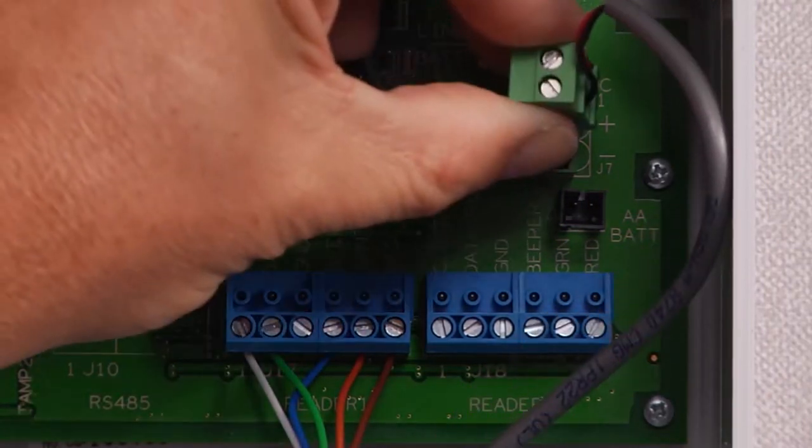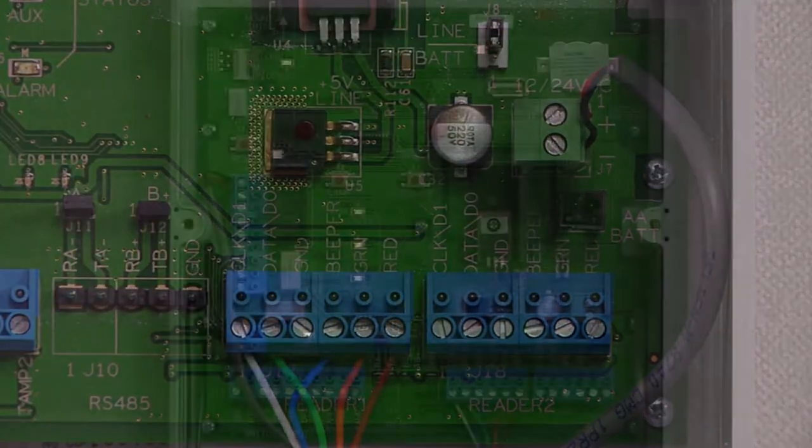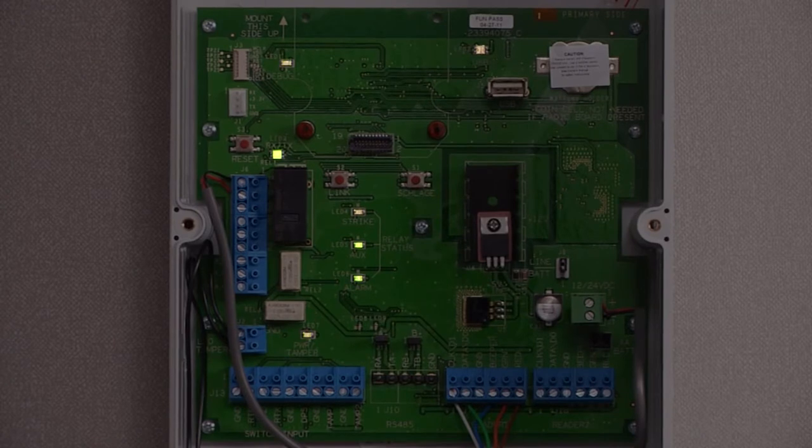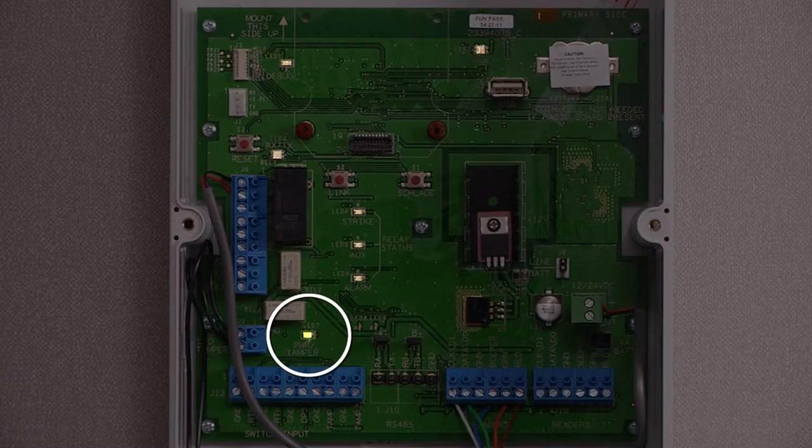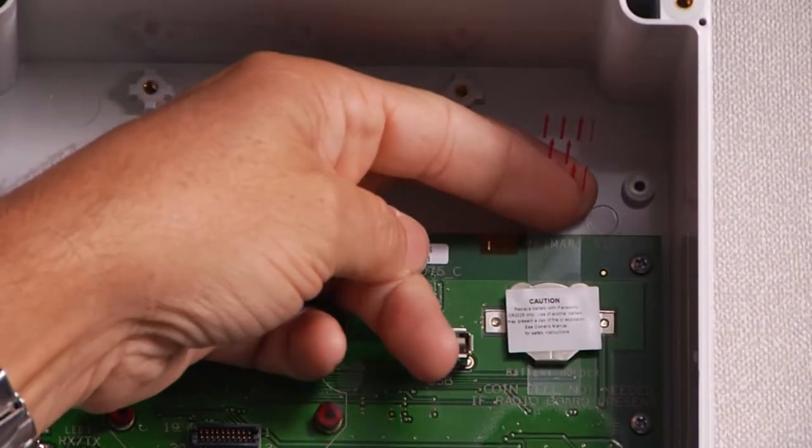After restoring power, insert the power connector into the CT5000. The CT5000 will flash the LEDs during startup. When the tamper LED is slowly flashing green, the startup is complete. Next, carefully remove the mylar strip.